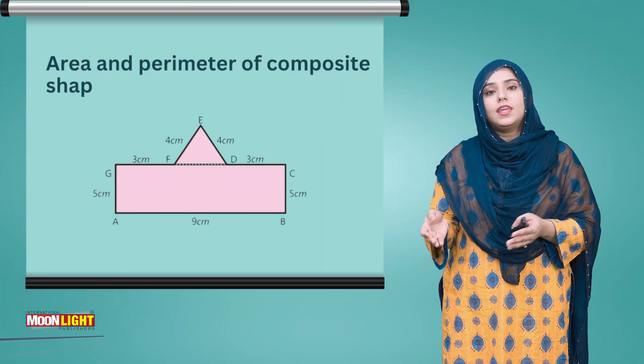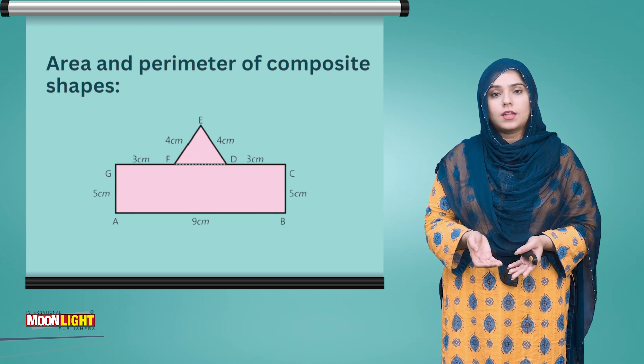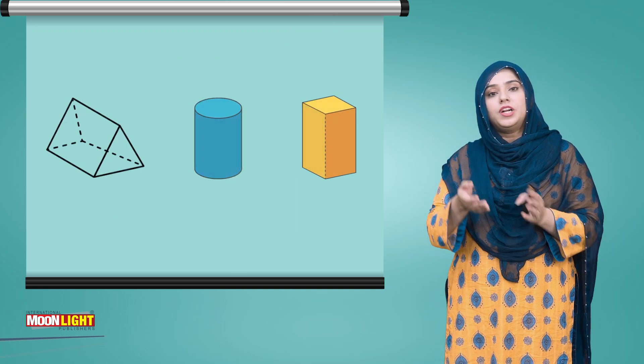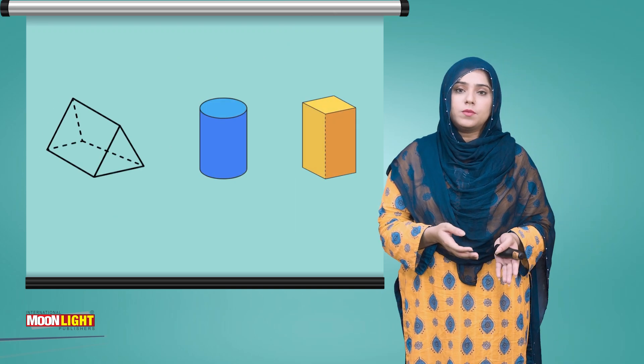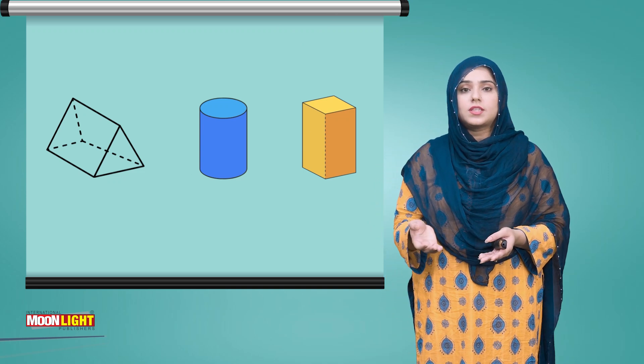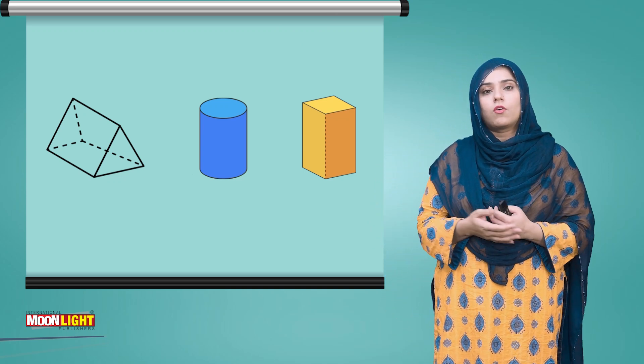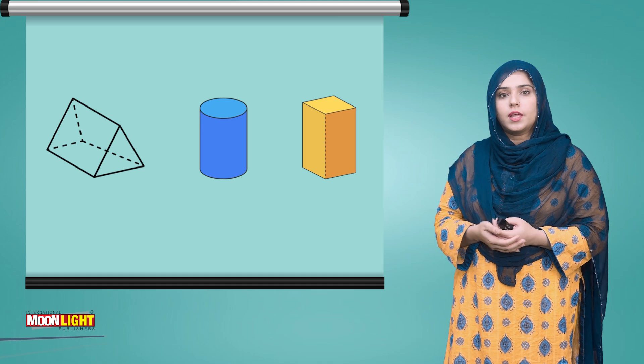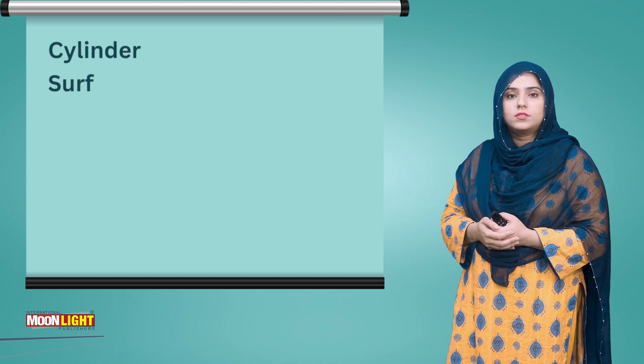the area and volume of which we can find out. Then we discussed three dimensional shapes: the prism, the cube, and the cuboid, and their surface area and volume formulas were discussed. After that we discussed the cylinder.